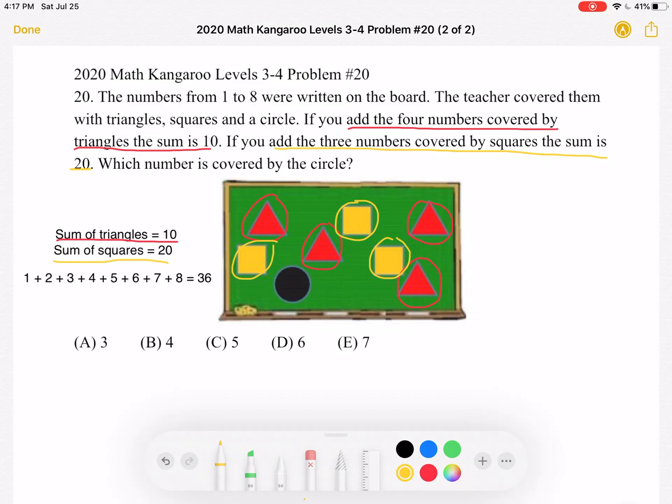So now if we look at the board, we can see that we know the sum of all the circled shapes. We know that that sum is equal to 10 plus 20, which is 30.